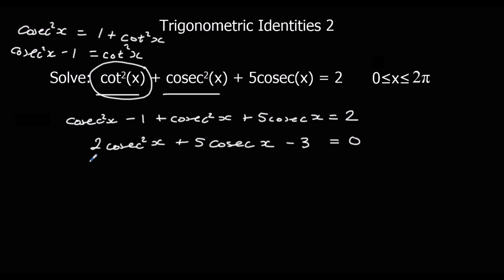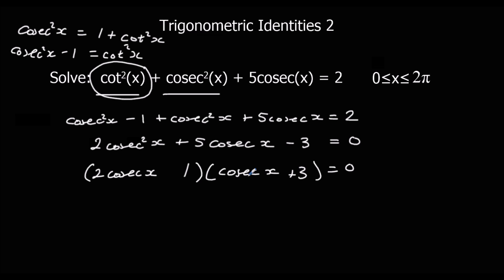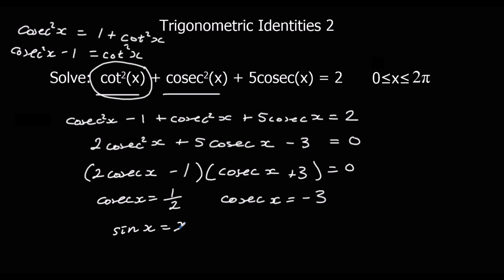We factorize this into two brackets: (2 cosec x − 1)(cosec x + 3). So cosec x = ½ or cosec x = −3. We can't put cosec into a calculator, so we convert to sine by flipping both sides: sin x = 2 or sin x = −⅓.